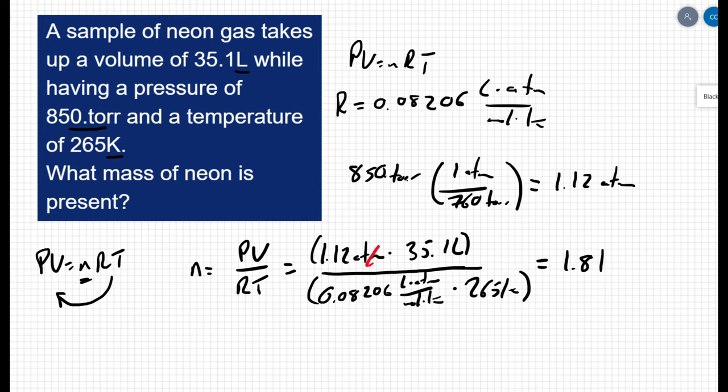I go back to my equation. The atmospheres cancel out. The liters cancel out. My Kelvin cancel out. And I'm left with 1 over 1 over moles. Well, 1 over 1 over moles is the same thing as moles. So I have 1.81 moles of neon.